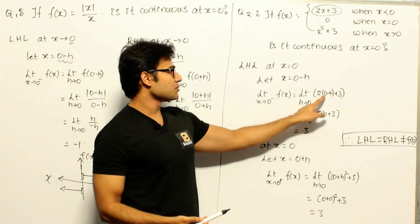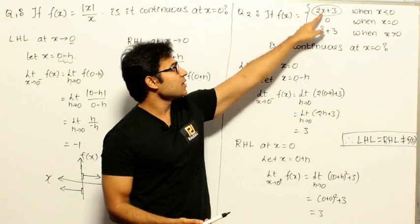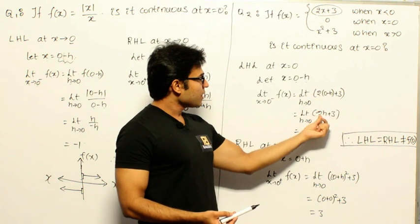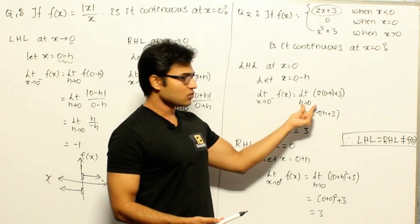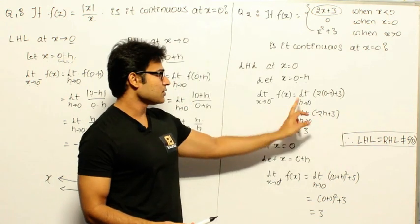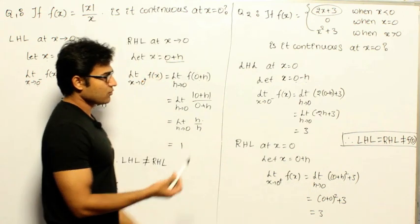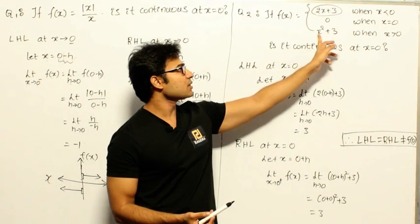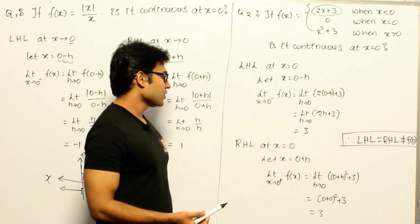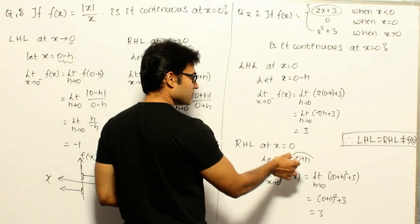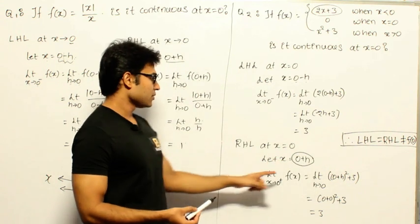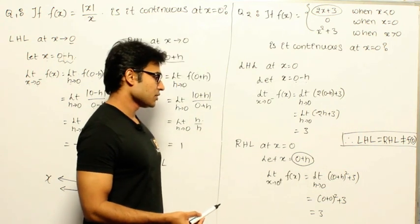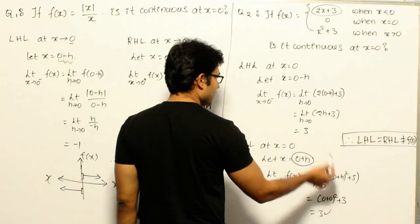Substituting x = 0 − h into 2x + 3 gives 2(0 − h) + 3 = −2h + 3. Taking the limit as h → 0, we get 3. So the left-hand limit is 3. For the right-hand limit, x = 0 + h is greater than 0, so we use x² + 3. Substituting gives (0 + h)² + 3 = h² + 3. As h → 0, this also gives 3. So left-hand limit equals right-hand limit, both equal to 3.